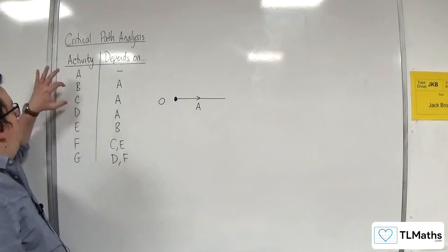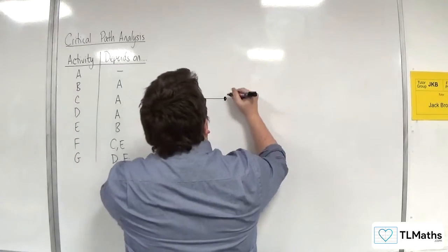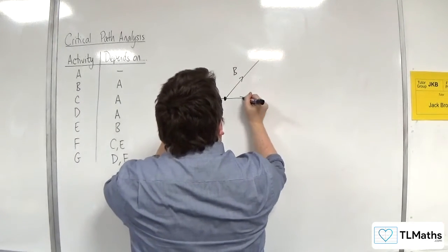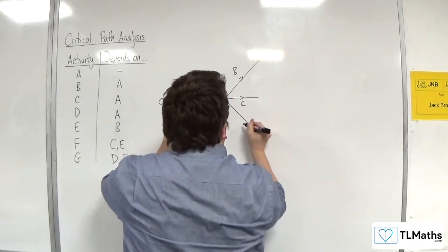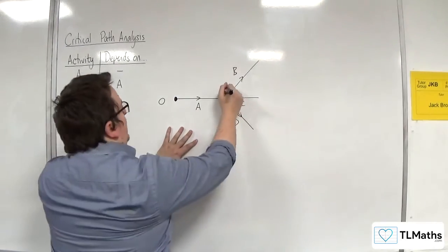So then we've got B, C, and D all rely on A. So I'm going to have B, C, and D all coming out of that node there. Let's label that 1.